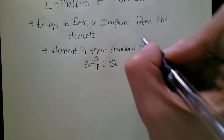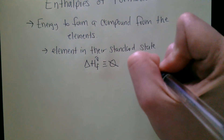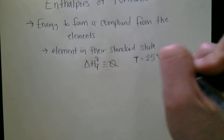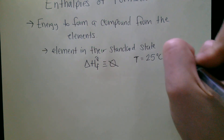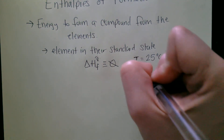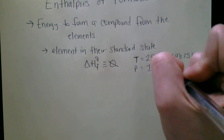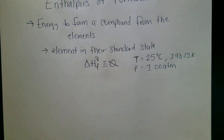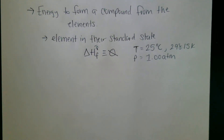Standard state means a temperature of 25 degrees Celsius, also known as 298.15 Kelvin, and a pressure of one atmosphere. But mostly it's the temperature — normal room temperature type of thing.